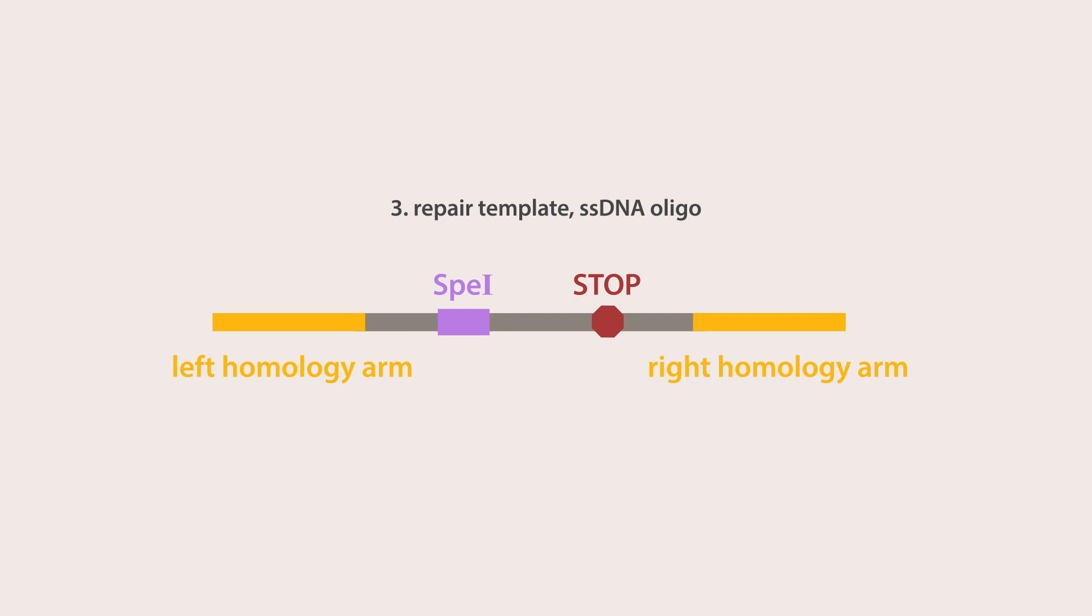Finally, to facilitate recombination, a repair template is required. This template contains left and right homology arms that are complementary to the target DNA. In this case study, the repair template carries three stop codons for early termination of the CAT gene, and a unique restriction site for screening purposes.